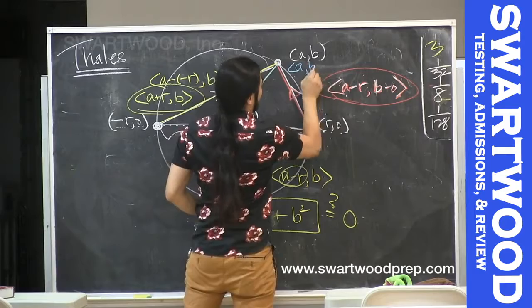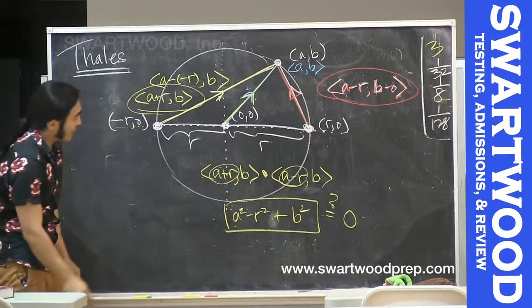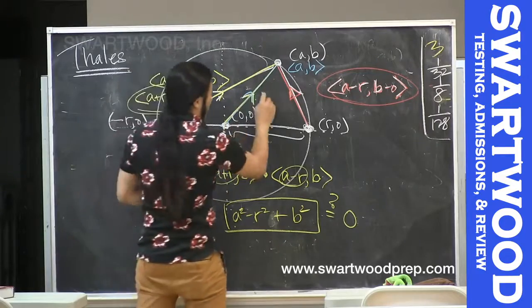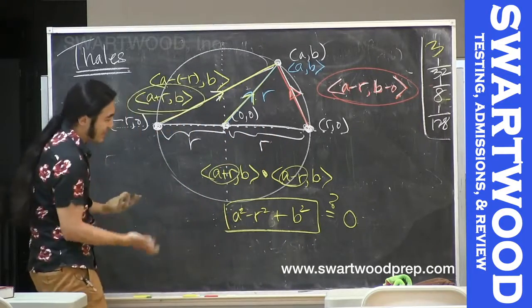But the length of A comma B is also what? R, because this is a radius.